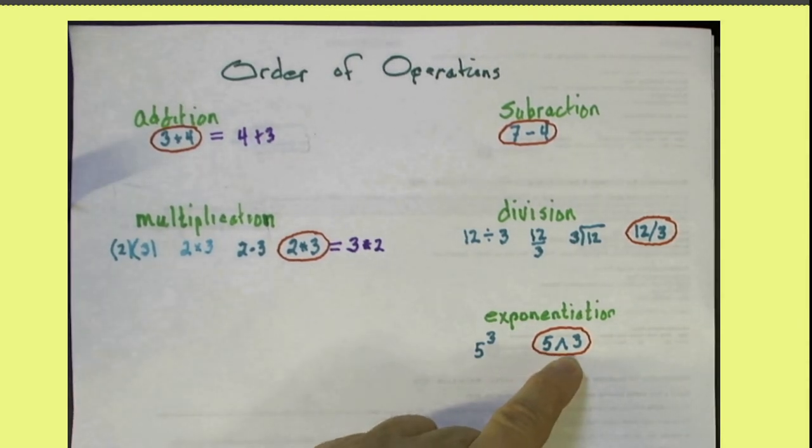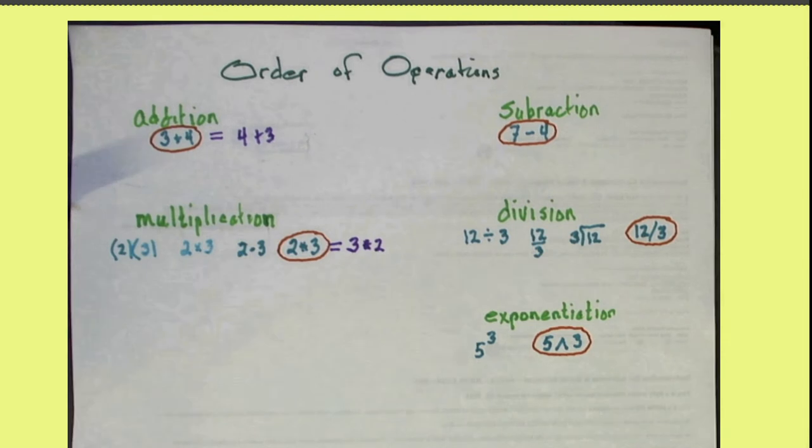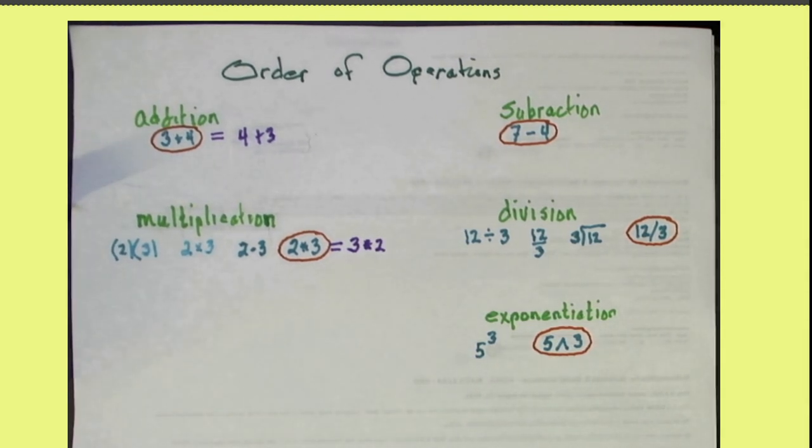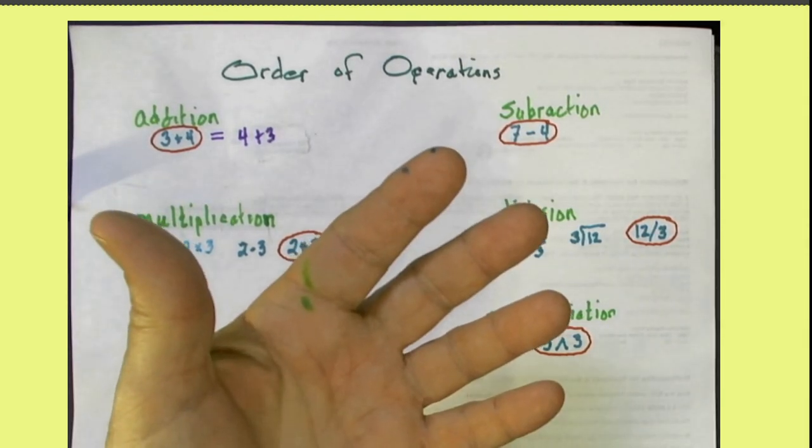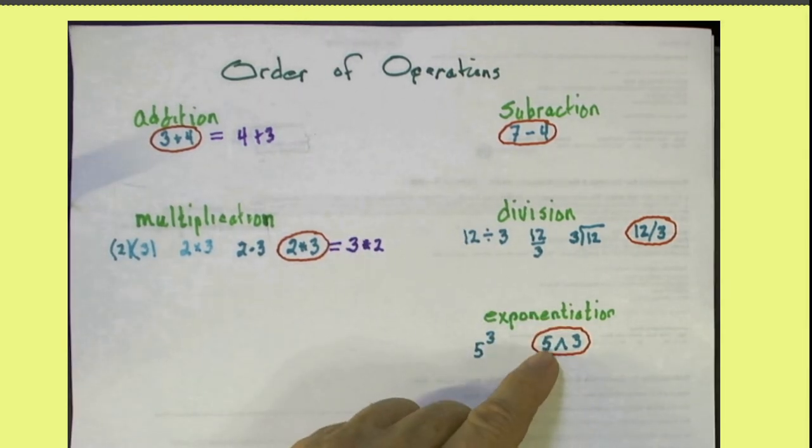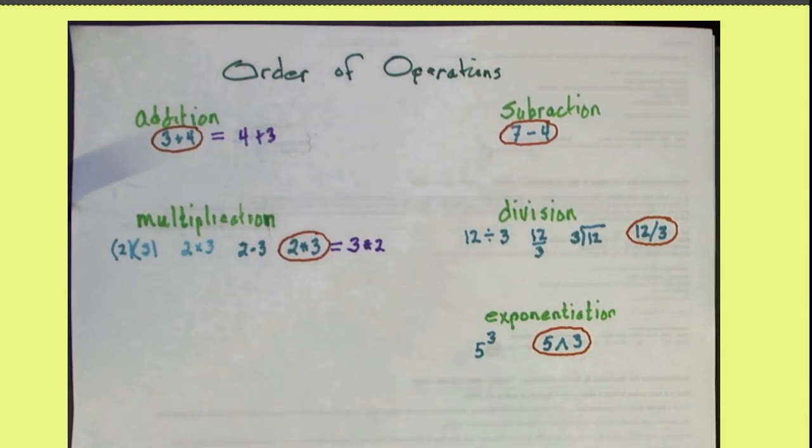Similarly with exponentiation. 5 to the third power is 125, but 3 to the fifth power would be 243. So 5 raised to the third power is very different than 3 raised to the fifth power.